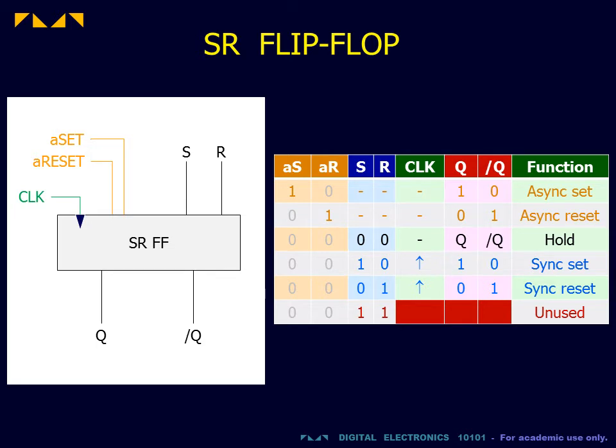In the function table we see the actions of all these inputs. We also note that the S equals 1, R equals 1 input state is unassigned.